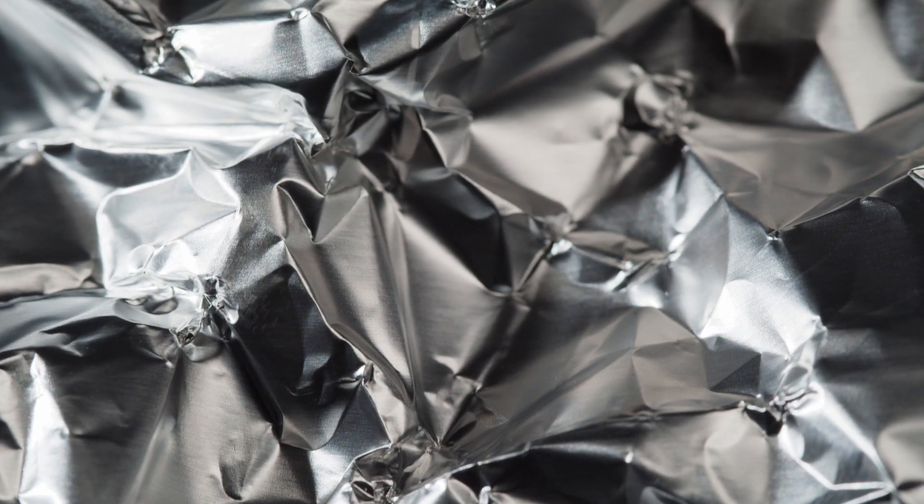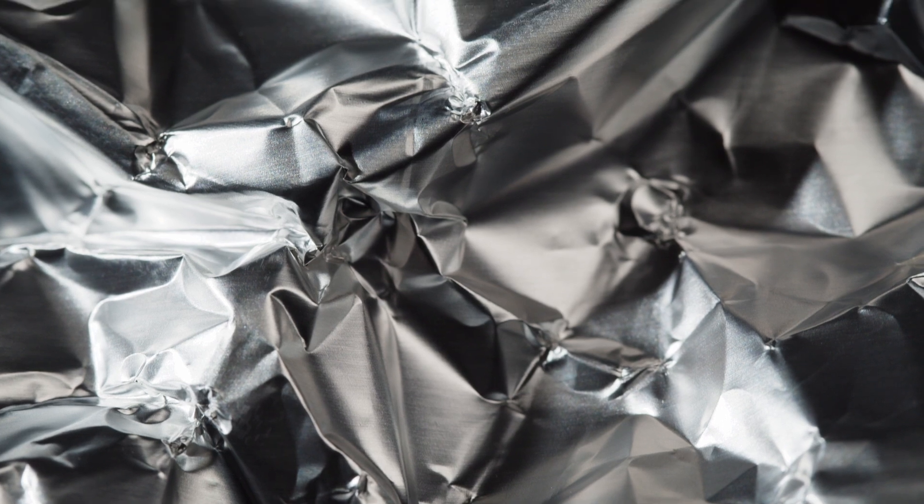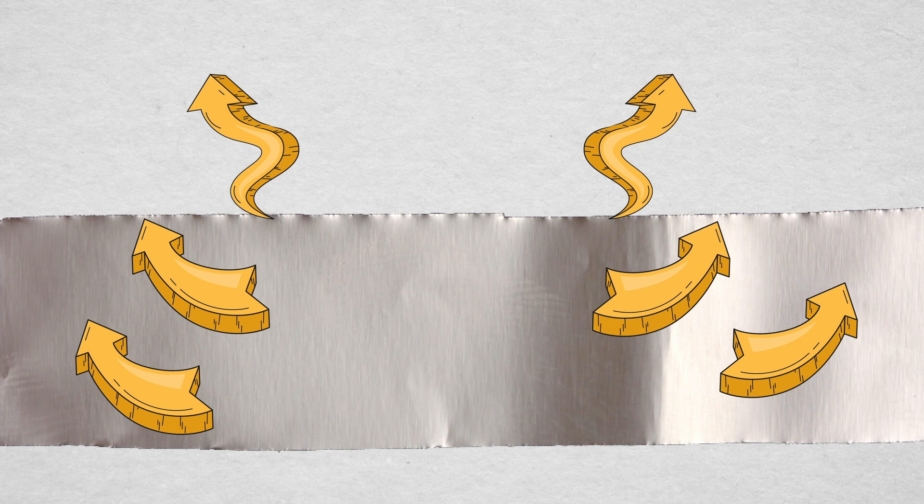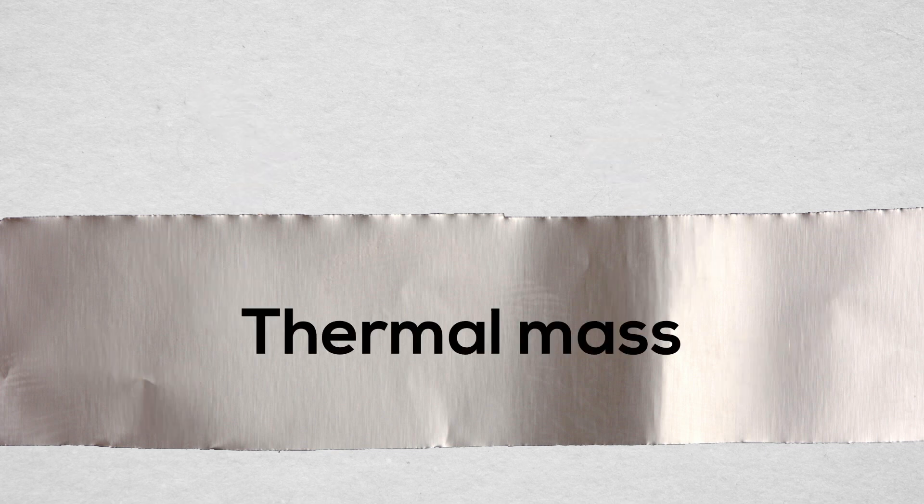Importantly, aluminum foil is not just useful due to its thermal conductivity. It is also incredibly thin with a low mass and possesses a large surface area. These factors result in the rapid dispersion of absorbed heat into the surrounding air, thanks to an attribute known as thermal mass.